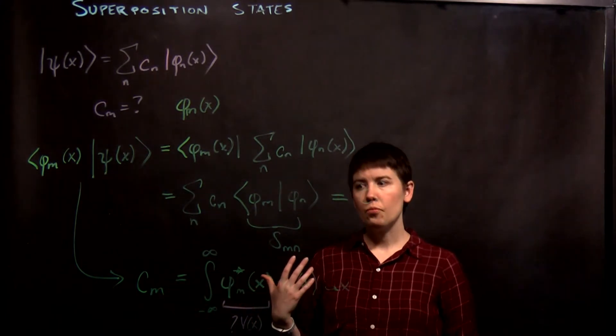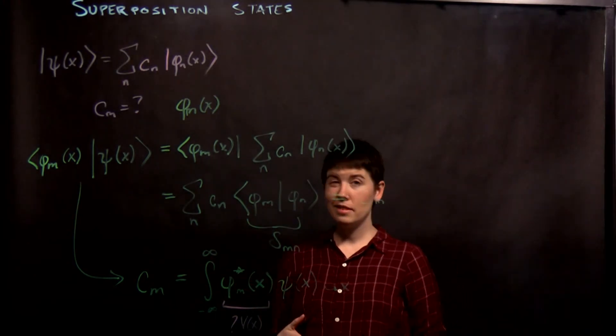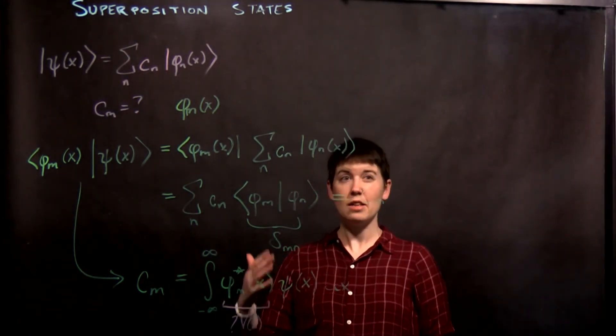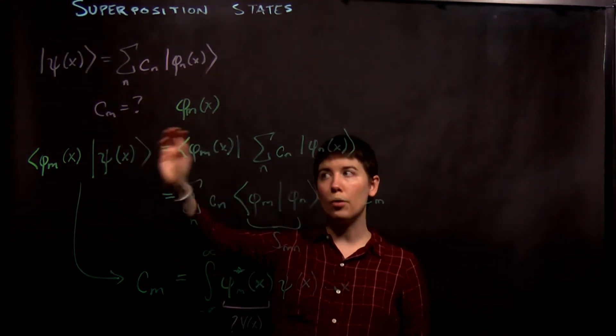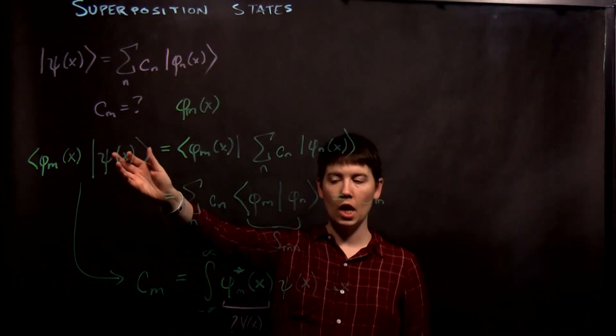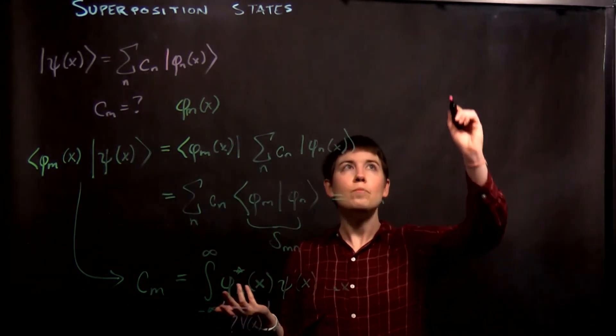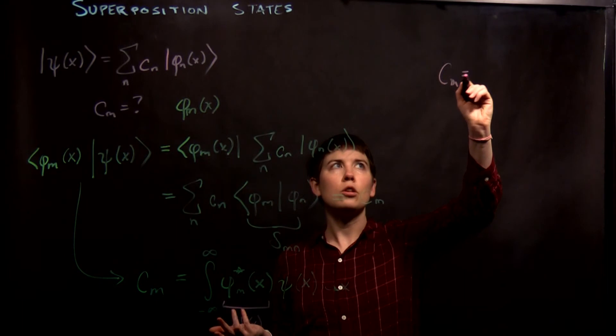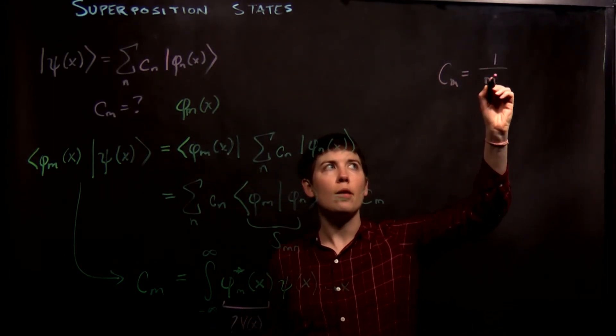Now there's going to be some really hard math here. And the idea being that often times we actually need an infinite number of c sub m to really create what our original general wave function is. And so you can imagine this as being a series, right? So maybe you get a form that looks something like c sub m is one over m to the fourth, right?